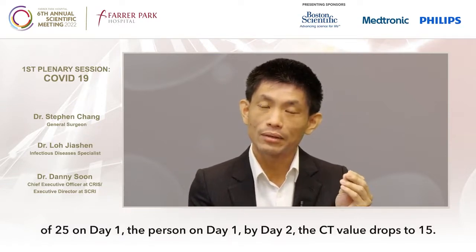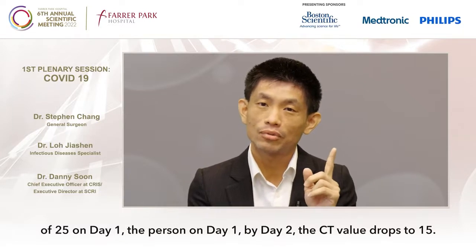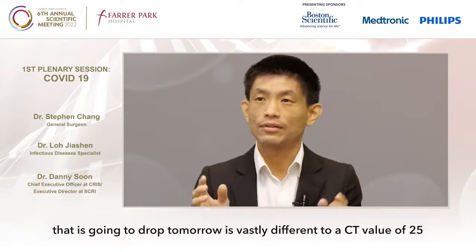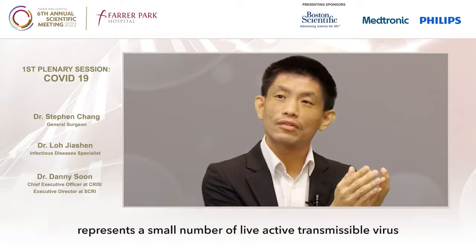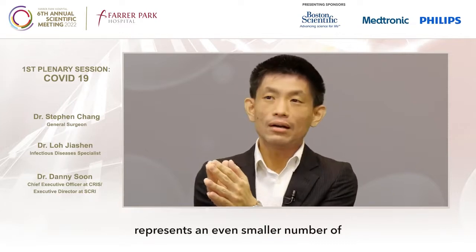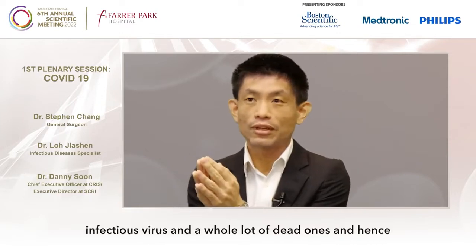If you take a CT value of 25 on day 1, by day 2 the CT value drops to 15, roughly. A CT value of 25 that is going to drop tomorrow is vastly different from a CT value of 25 that's going to remain the same the next day, say at 28. Essentially, a CT value of 25 represents a small number of live, active, transmissible virus. But a CT value of 25 later in infection represents an even smaller number of infectious virus and a whole load of dead ones. Hence, the transmissibility at the same CT of 25 is vastly different.